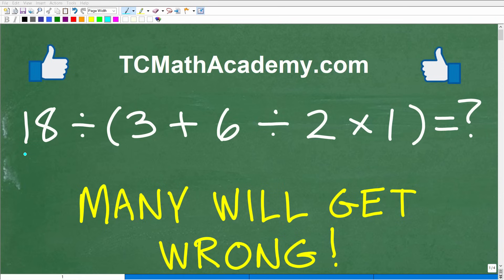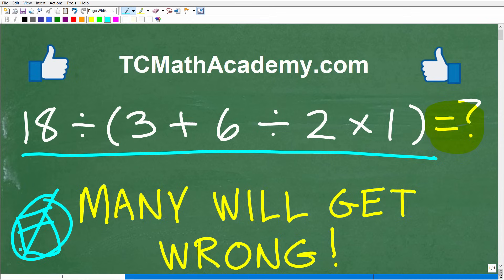Okay, so could you solve this basic math problem? Let me go ahead and tell you the problem here. We have 18 divided by parentheses, 3 plus 6 divided by 2 times 1 in parentheses. We want to simplify this numeric expression down to one answer, and we do not want to use our calculators. No calculators.